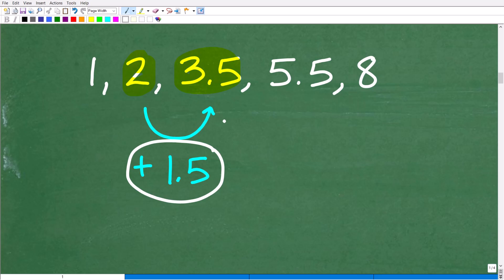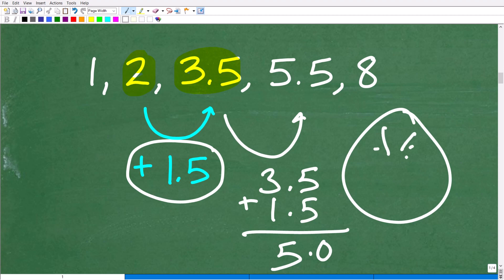Well, if that is the case, let's go ahead and test this. So if we take this 3.5 and then we add a 1.5, do we get to a 5.5? Well, no, we get to a 5 or 5.0. So that is not right as well.